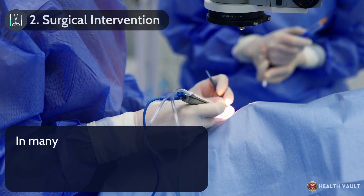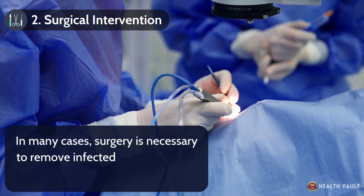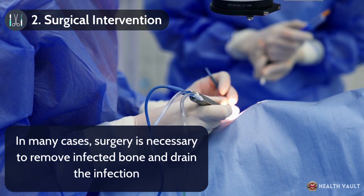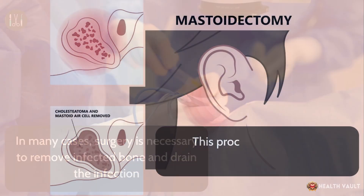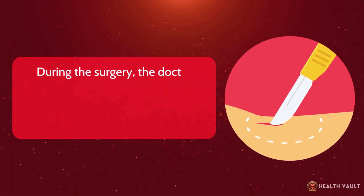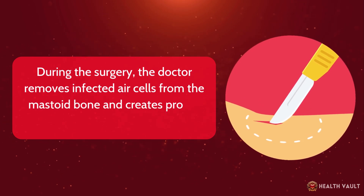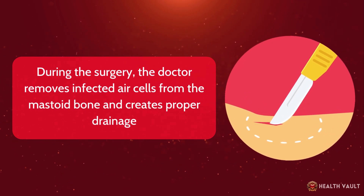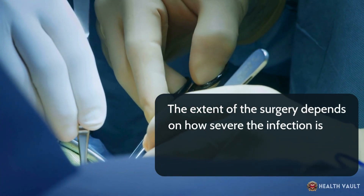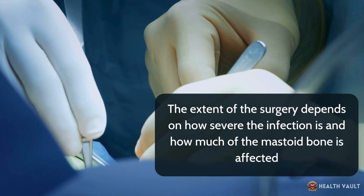In many cases, surgery is necessary to remove infected bone and drain the infection. This procedure is called a mastoidectomy. During the surgery, the doctor removes infected air cells from the mastoid bone and creates proper drainage. The extent of the surgery depends on how severe the infection is and how much of the mastoid bone is affected.